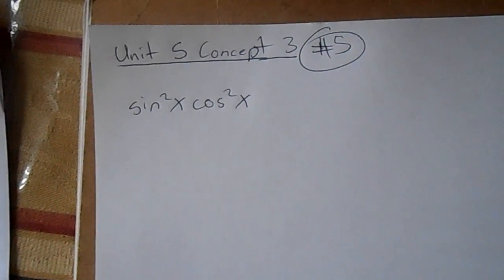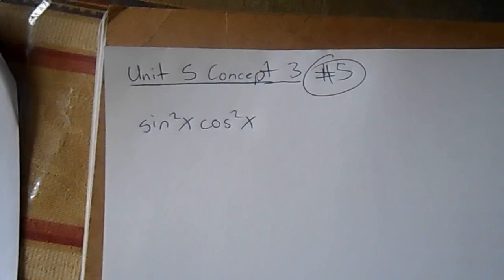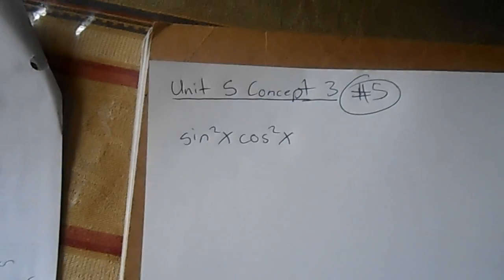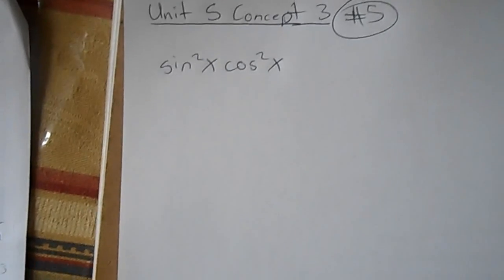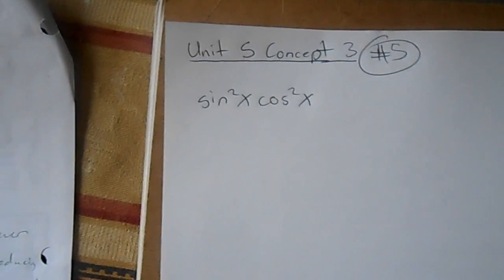Alright, this is problem number five, PQ number five from unit S concept three, which is sin²(x) times cos²(x).